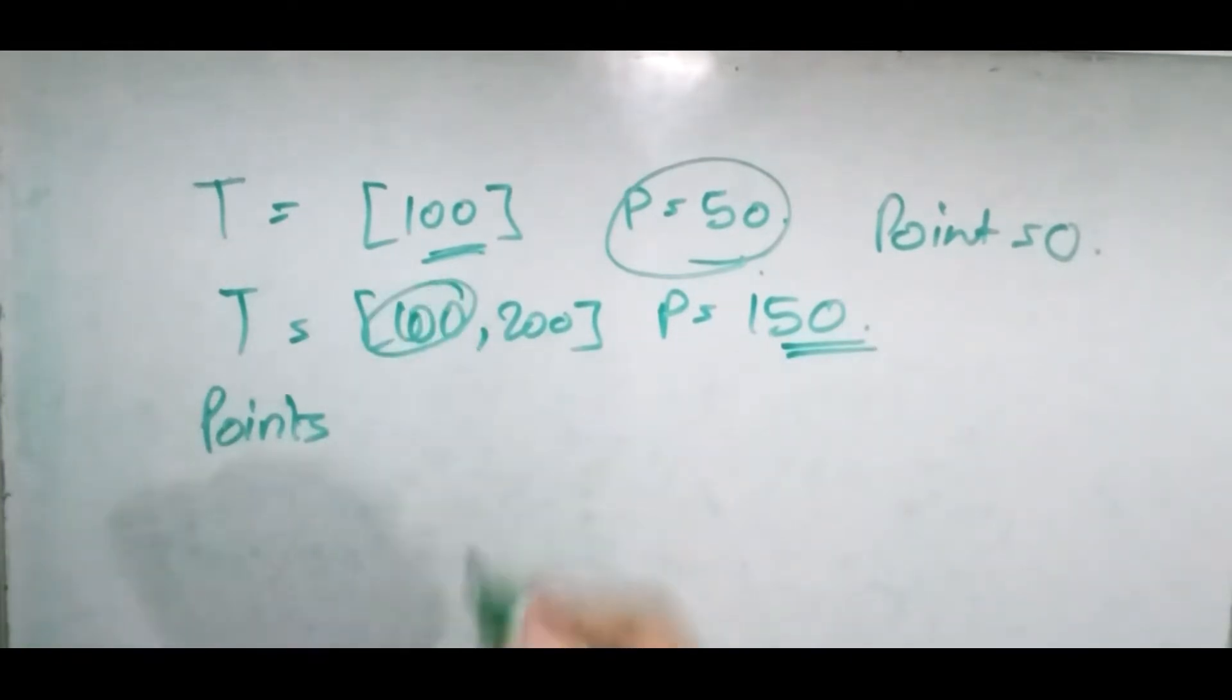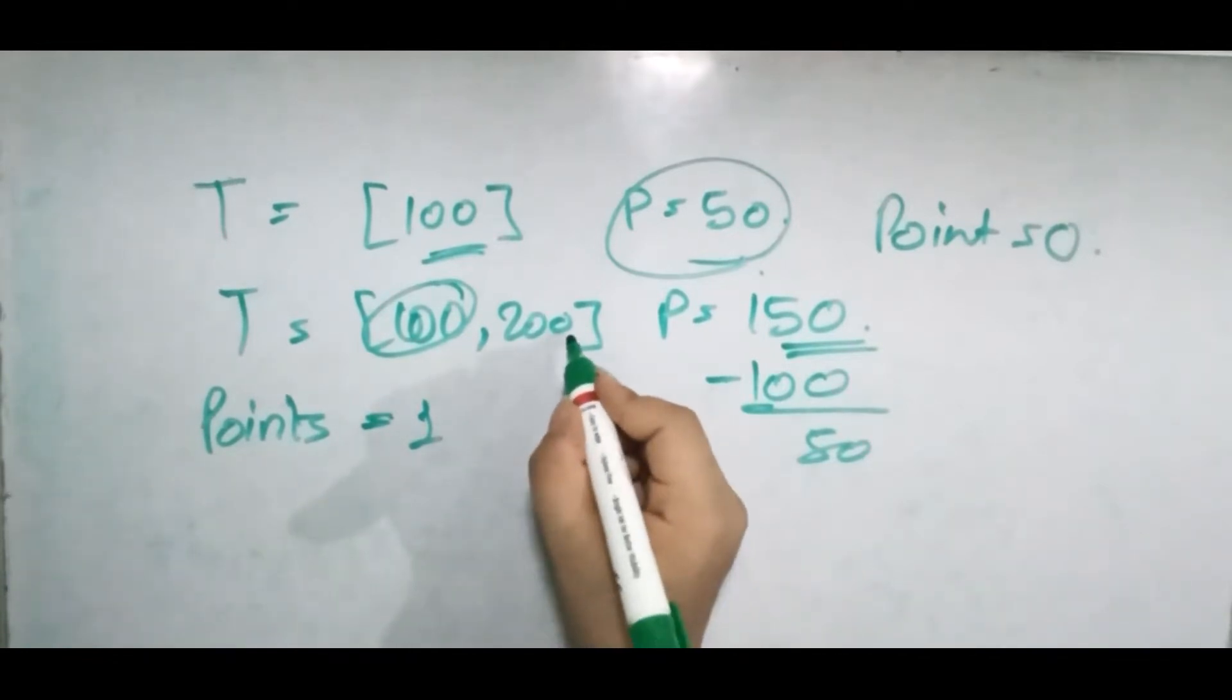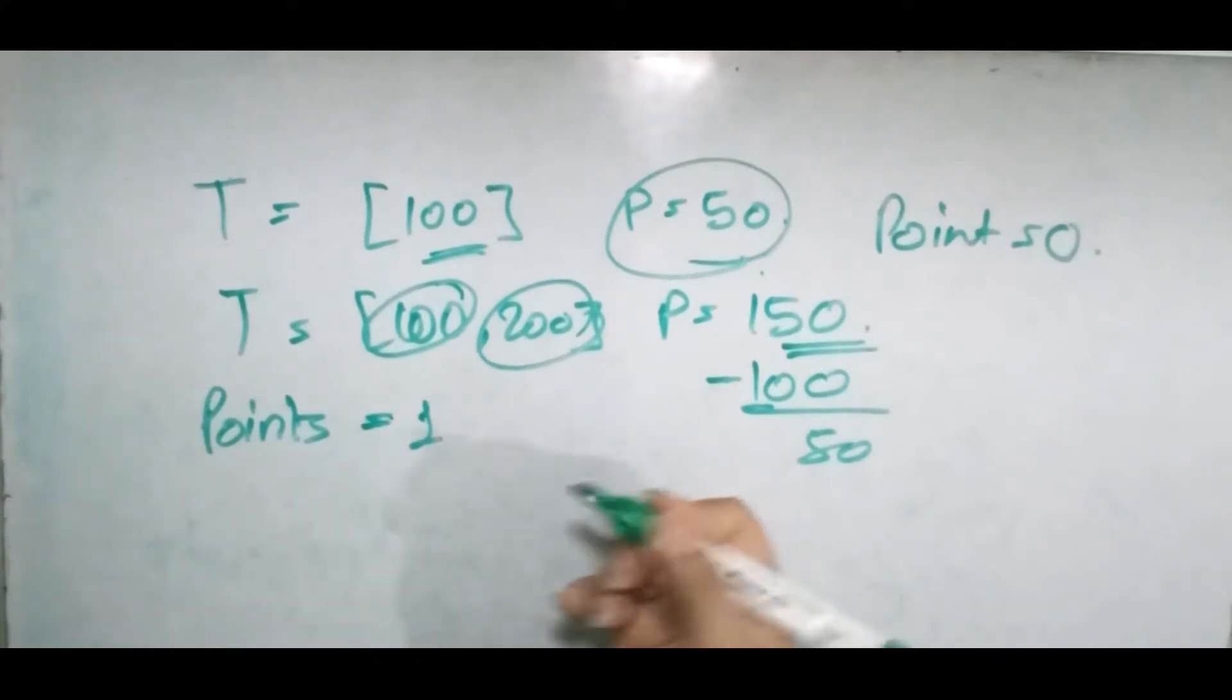We can use it face up, so we decrease the power by 100, it's left with -50, and our points become one. Now we can use it face down, but the points will decrease by one. So the maximum points we can get is one.